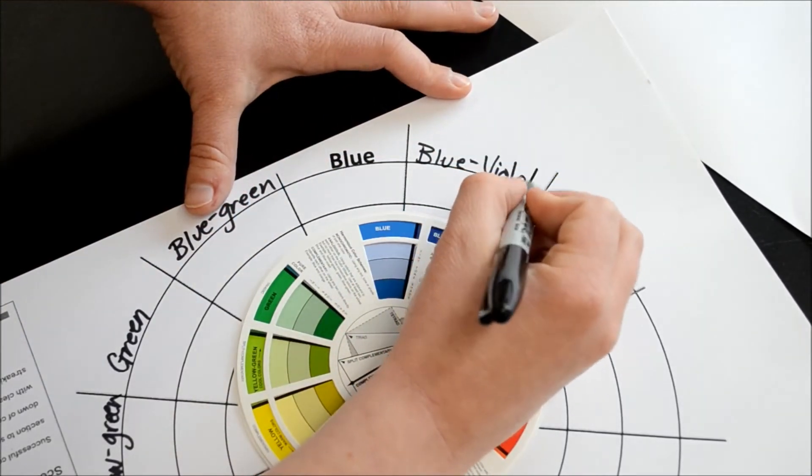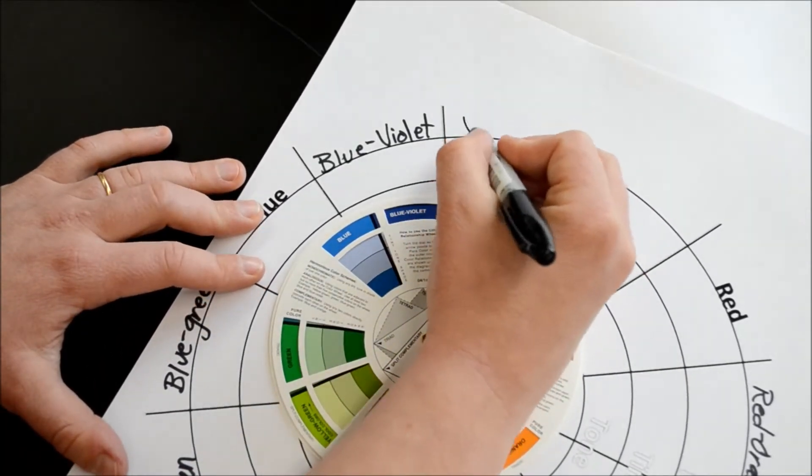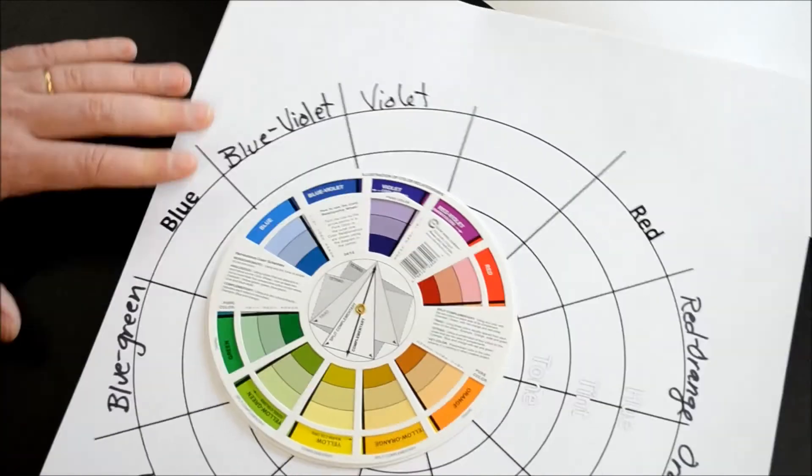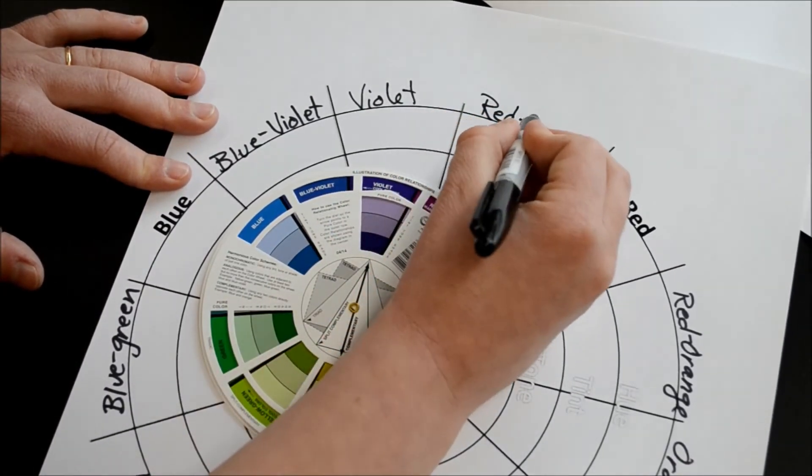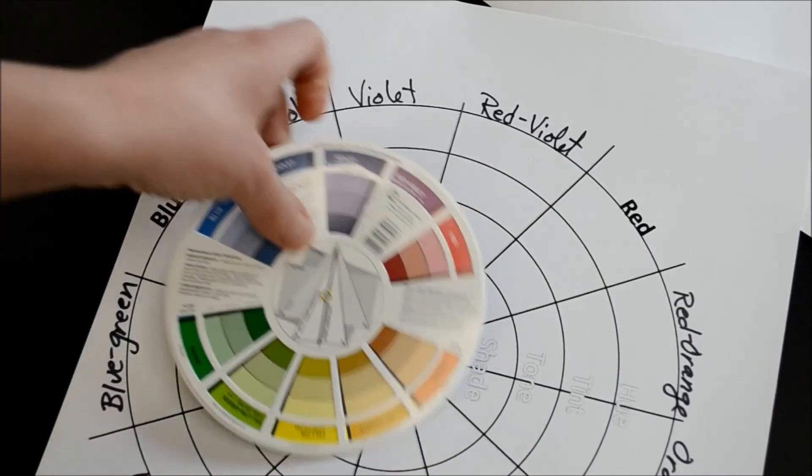Why do we call it violet rather than purple? I have no idea. We just do. Next is plain violet, and after violet, we circle back around to red-violet.